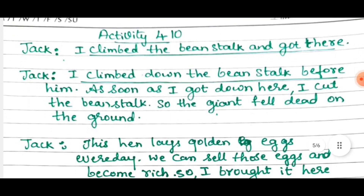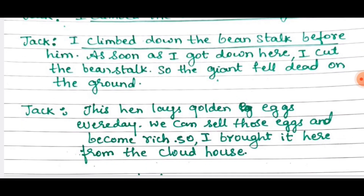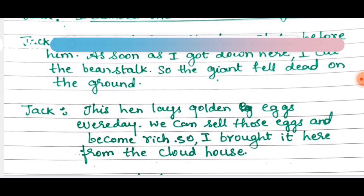Next is activity 4.10 — complete the conversation. There are three Jacks in the conversation, so complete the first two blanks. Answer: I climbed the beanstalk and got there. Jack's answer to mother: I climbed down the beanstalk before him. As soon as I got down here, I cut the beanstalk, so the giant fell dead on the ground. Jack's further answer: this hen lays golden eggs every day. We can sell those eggs and become rich. So I brought it here from the cloud house.